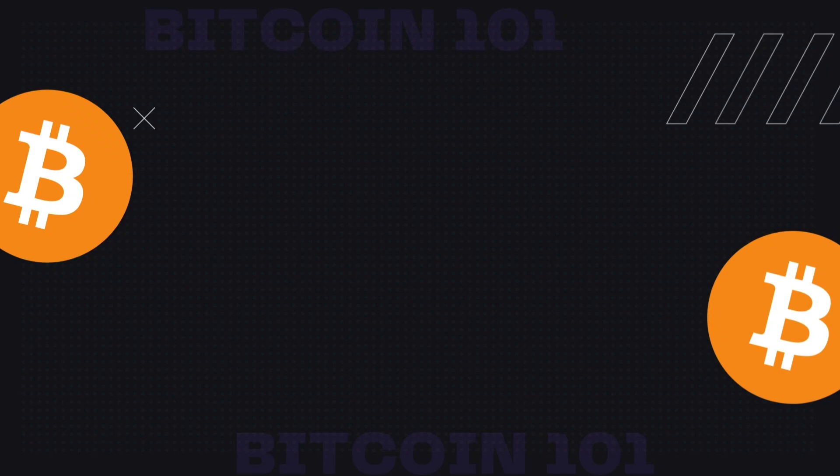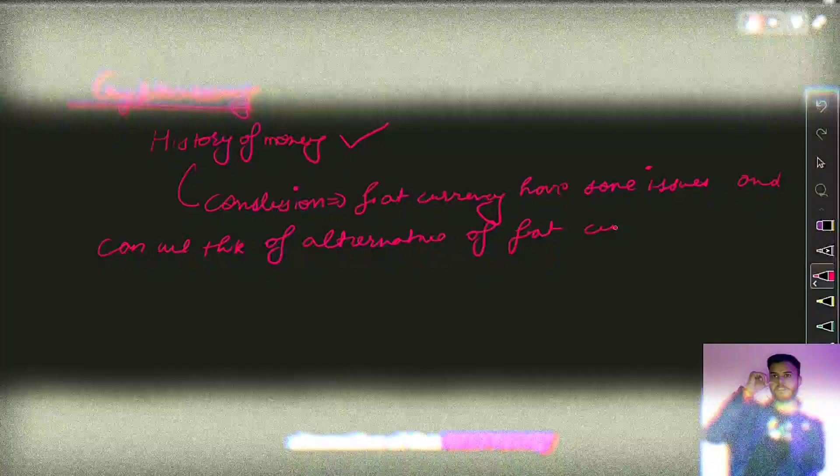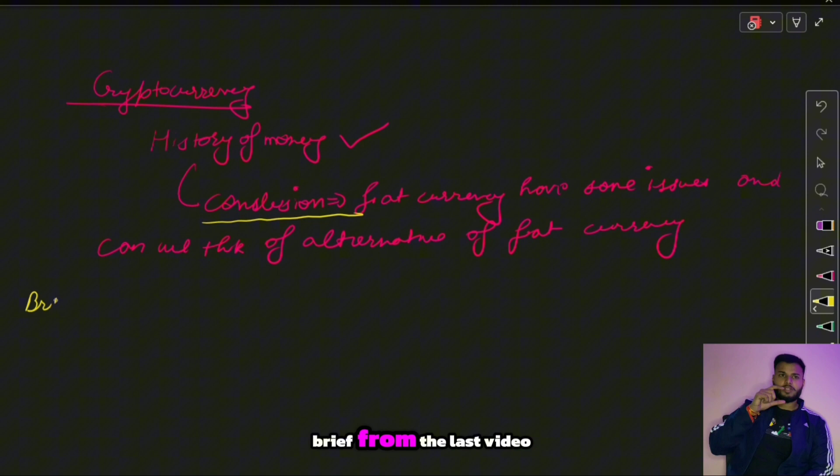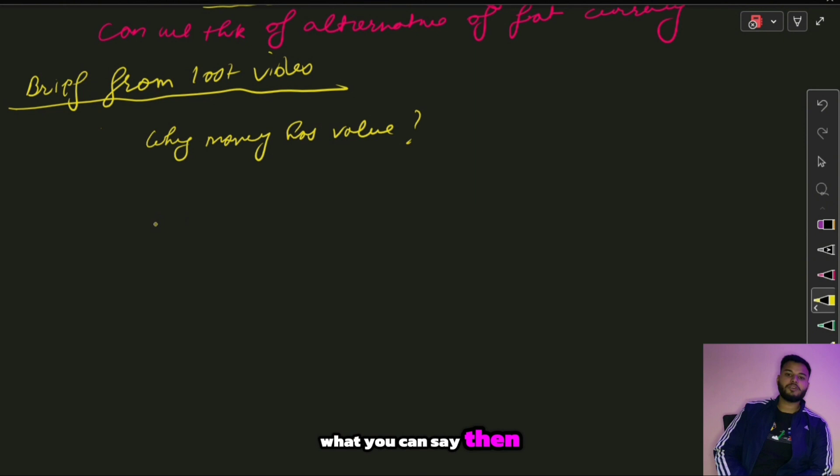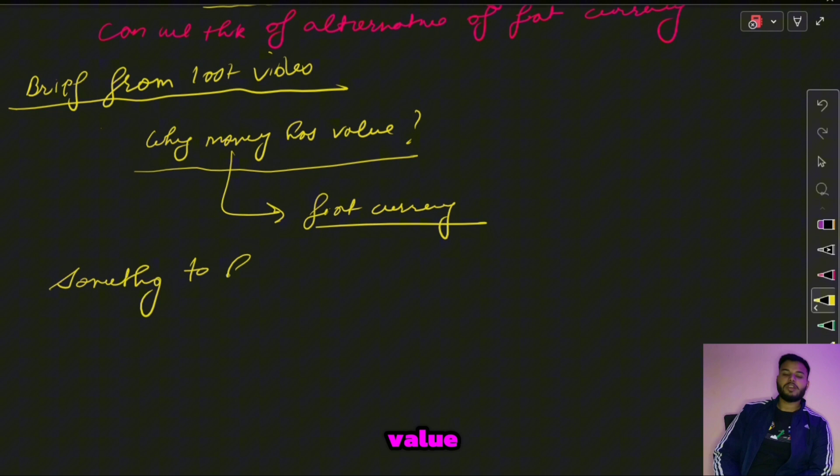Just to give you a brief from the last video: we covered the topic of why money has value. We tried to understand why money has value. To refresh our memory, let's consider why fiat currency has value. Basically, for something to have value it should be acceptable — acceptability is one of the properties of money we discussed.